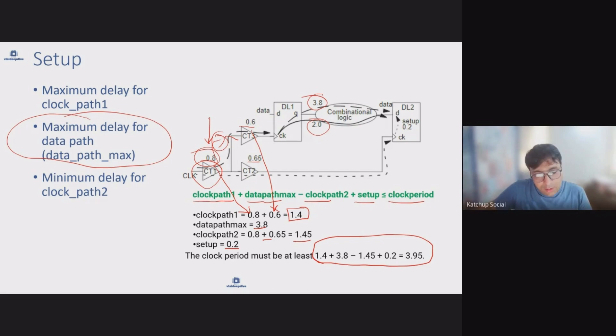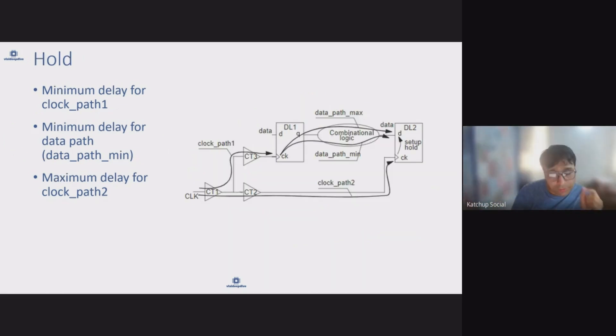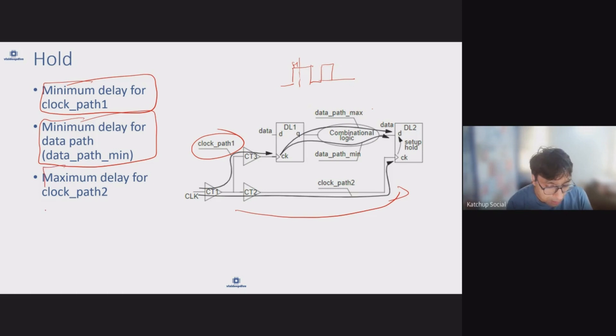Now let's understand for hold. For the hold, worst case would be - let's revisit first what is checked in the hold. After data is close to clock edge, for how much time data should stay stable is hold time. So for hold time to be worse, data should arrive as early as possible. Now in order for data to arrive early, for clock path one delay should be minimum, for data path delay should be minimum, and for this receive clock delay should be maximum.